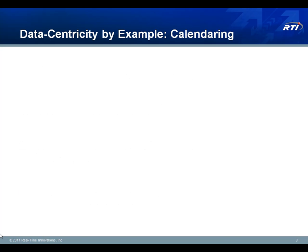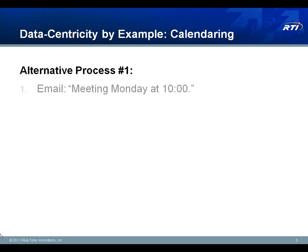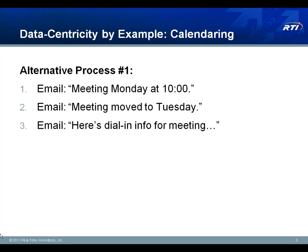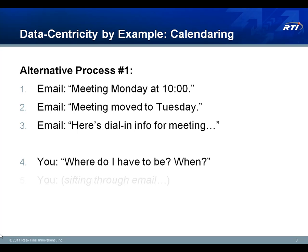Let's take a quick example. Suppose that someone wants you to show up for a meeting at a particular time, and so they send you an email saying please meet me in the conference room at 10 o'clock on Monday. Now suppose the meeting needs to move, and so they send you another email. Then they have additional information, and so they send another email. So when Monday morning rolls around, you're thinking: do I have a meeting? Was it moved? And you're rifling through your inbox trying to find all these emails, making sure you're looking at them in the right order, and trying to deduce what the current state of the meeting is.